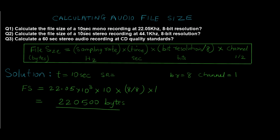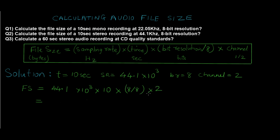For question number 2, time is again 10 seconds and bit resolution is also the same at 8 bits, but the channel is stereo so the channel value is 2. The sampling rate has changed to 44.1 kilohertz, so we multiply by 10³. Substituting these values — 44.1 × 10³ × 10 × 8 ÷ 8 × 2 — and performing the multiplication gives a final answer of 882,000 bytes.